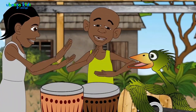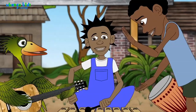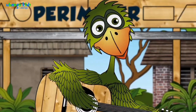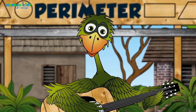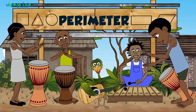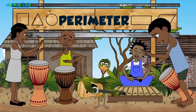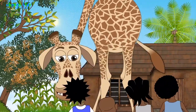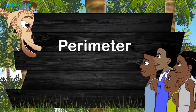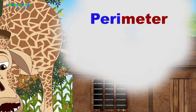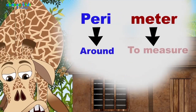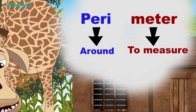Perimeter is the total distance around the shape, adding all the lengths of the sides of the shape. The Greek word 'peri' means around, and the Greek word 'meter' means to measure.